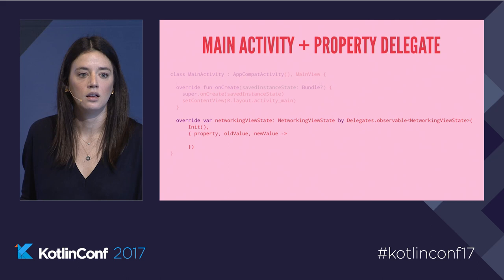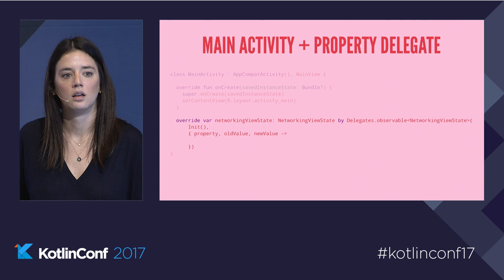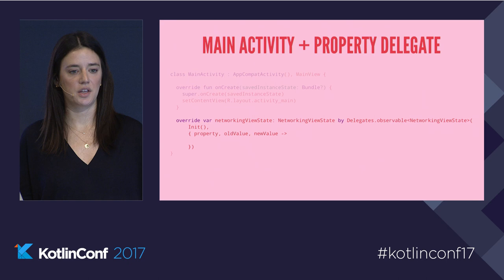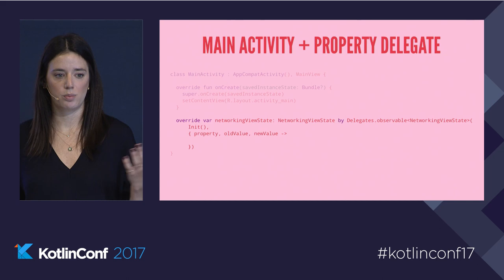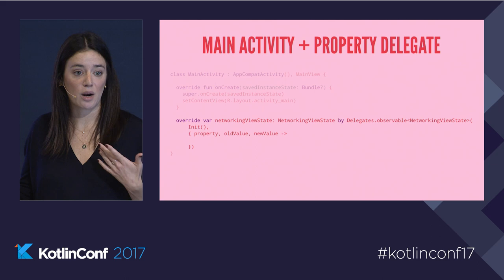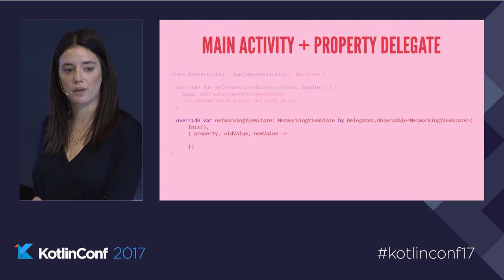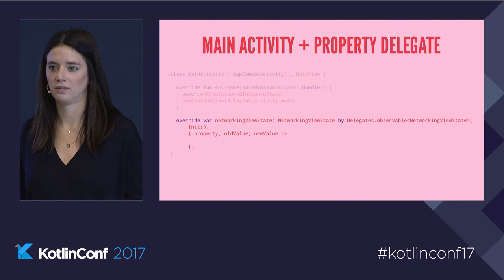Question about where the networking view state lives — is it in the presenter or the view? And also, what happens when we rotate? The networking view state as a property lives on our view interface. As a class, it can live anywhere in your application. I have a commons package where I leave things that don't have a real place to live — things like networking view state. For rotating on view state, it's the same as any other state — you can store it, you can make it Parcelable if you'd like.